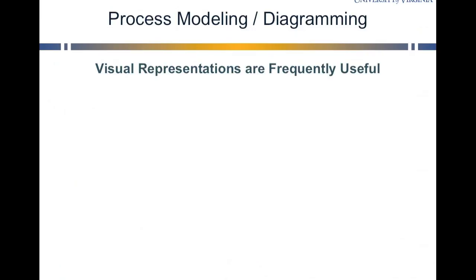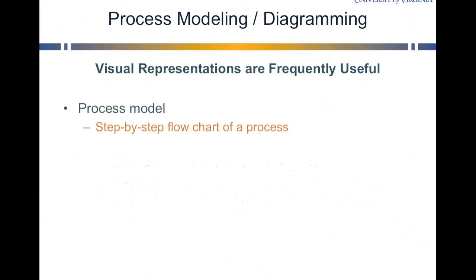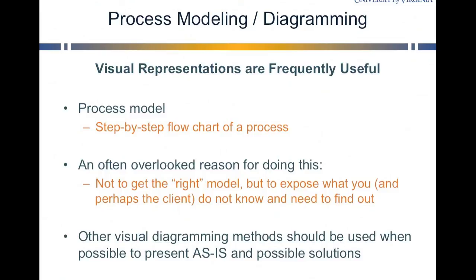The other technique you may have noticed is the use of diagramming. This doesn't have to be limited to just process modeling, but that's what we saw in the prior example. Visual representations are really useful in both the descriptive scenario and the ideal situation. A process model is essentially a step-by-step flowchart. The purpose isn't just to get the right model — there may not even be a right diagram — but it's really to expose you and the client to what you don't know and need to find out about the current situation. Different people at the same company will often have different perspectives on the same problem.